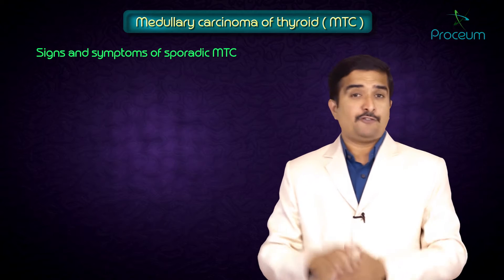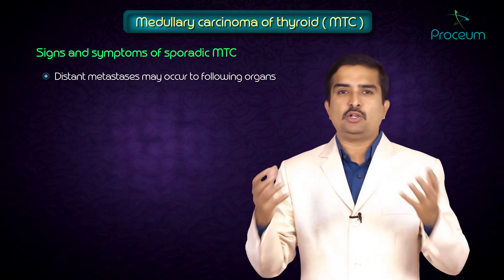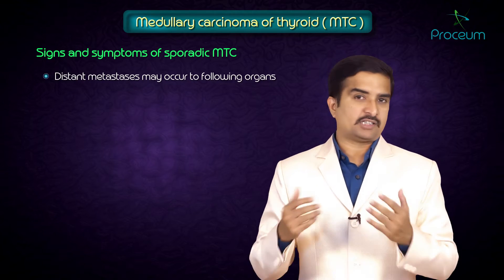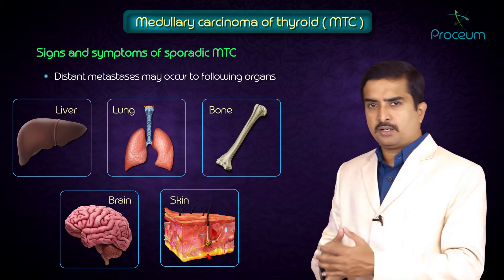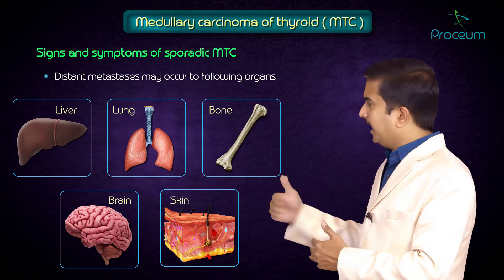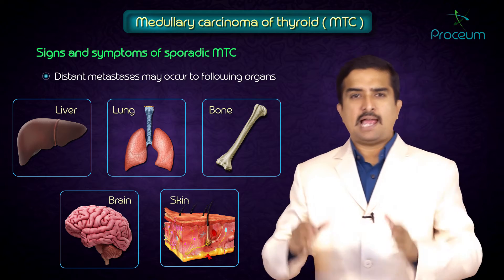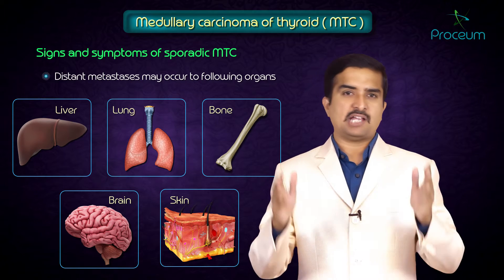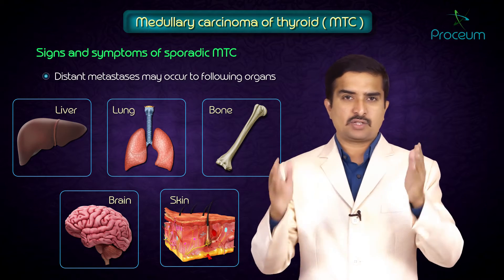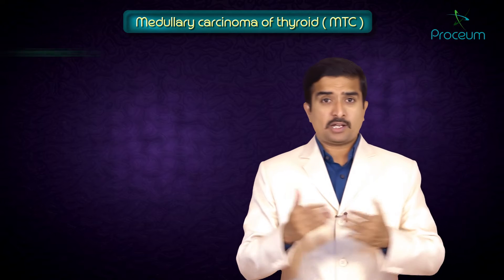Approximately 5 to 10% of patients have distant metastatic disease. Distant metastasis in MTC typically occurs in the liver, lungs, and bones, and less often in the brain and skin.